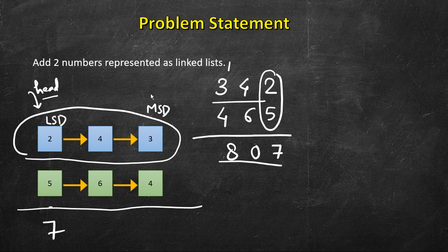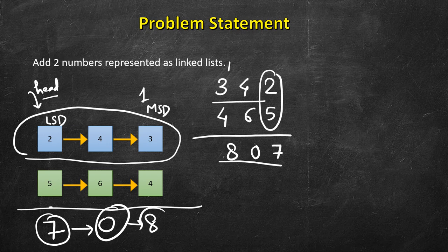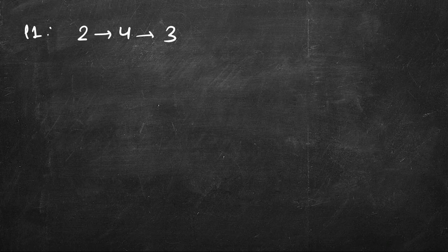So 7, 0, and 4+3+1 carry gives 8 — we should return the list 7→0→8. So how will we do it? We have list1 which is 2→4→3 and list2 which is 5→6→4.